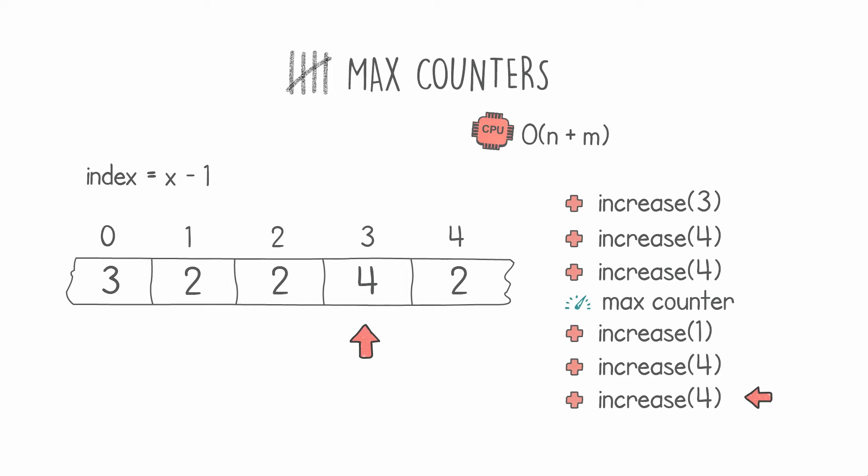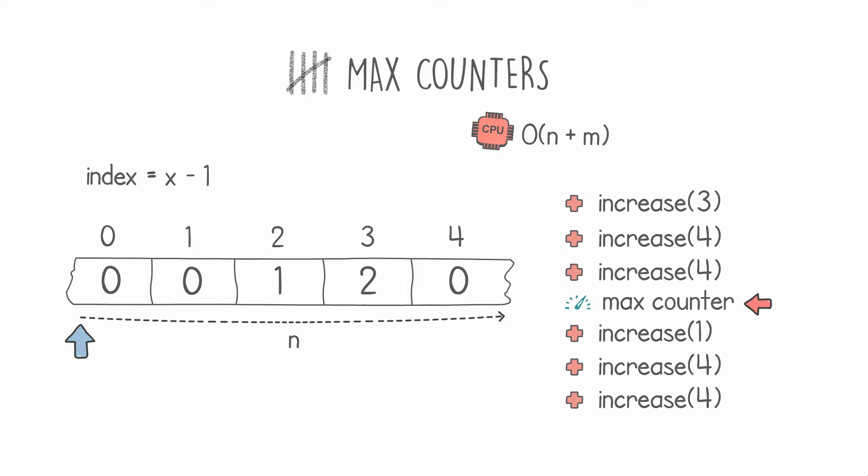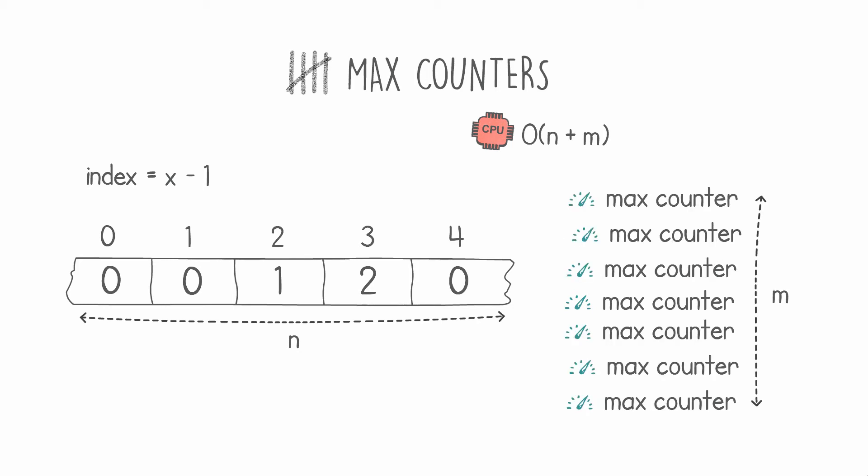The problem with this solution is the max counter operation. In the max counter operation we go through every single item in our array and set it to the maximum value. That particular operation requires n steps, and in the worst case this turns our algorithm into a quadratic one. The worst case of our naive algorithm is when every single instruction is a max counter operation — when this happens we do a linear scan for every instruction. So if we have m instructions we end up with m times n operations. We need to find something faster.